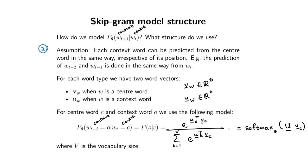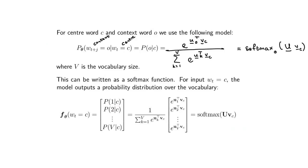So this is the O-th element from the softmax. The important thing is we've defined it such that these are valid probabilities, and for any center word and context word we can get a probability from our model. We still need to figure out how to learn U and V — we'll get to that shortly. But we can think of this as a model that takes a center word as input and outputs a vector the size of our vocabulary.